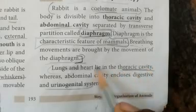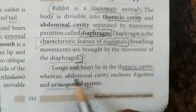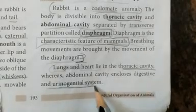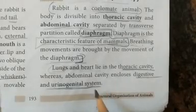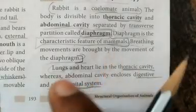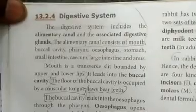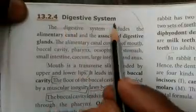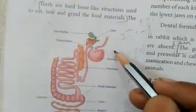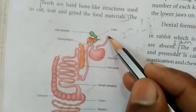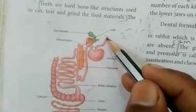The lungs and the heart lie in the thoracic cavity. Now, how do we look at the digestive system? The rabbit is a herbivorous animal.